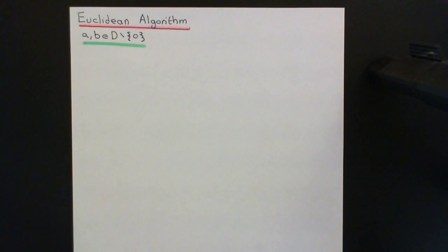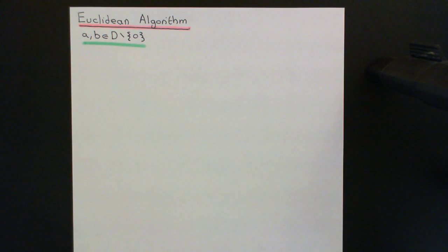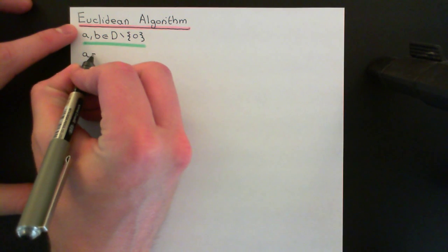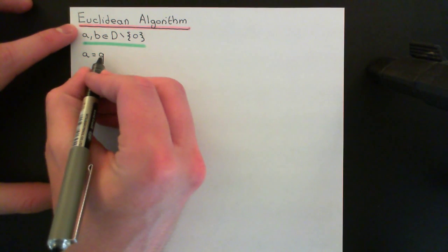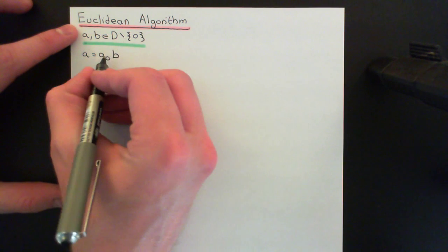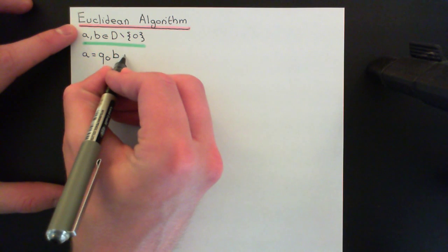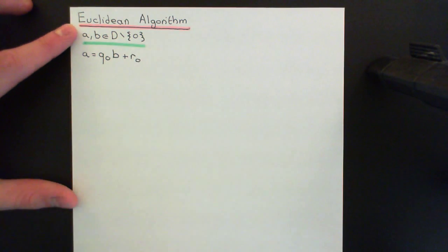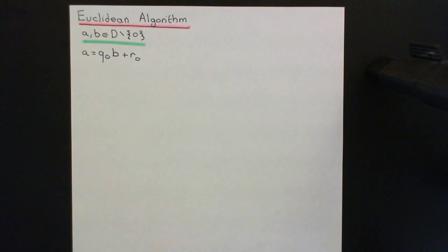We start by performing the division algorithm. Really, the Euclidean algorithm is just the division algorithm repeated again and again — and it will amazingly spit out the greatest common divisor. Applying the division algorithm, we write A as some quotient Q0 times B, plus some remainder R0. This is always valid since we're working in a Euclidean domain.